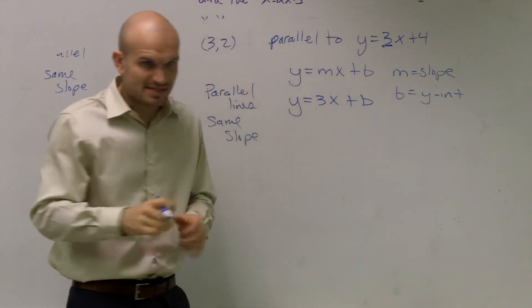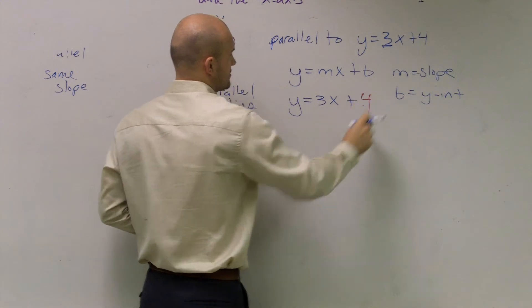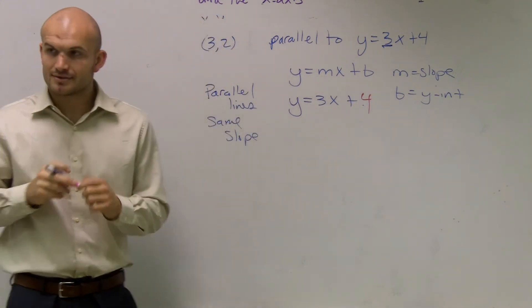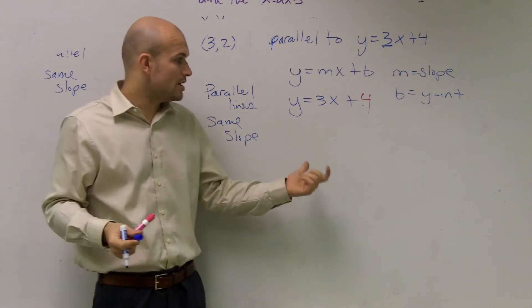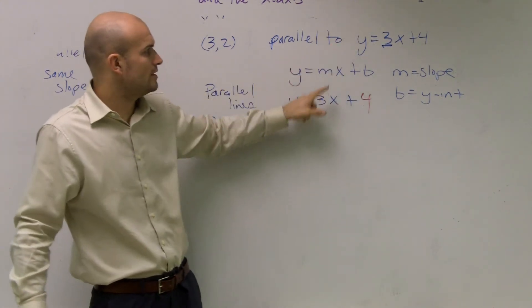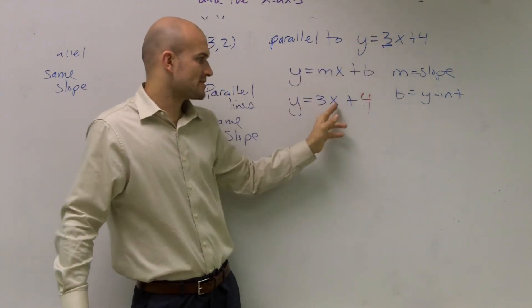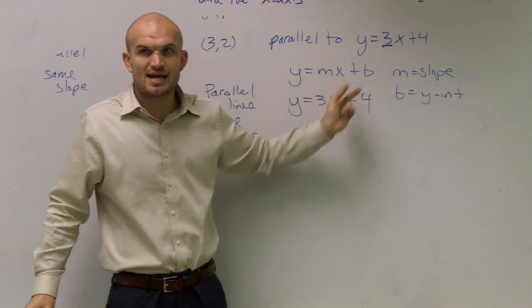Now, the biggest mistake that students want to do is they want to say, oh, well, your y-intercept is 4, right? Well, listen. It could be or it could not be. We don't know. The only thing that we know is if my slope is the same, we know if they're parallel, we know the slopes are the same. But if I say my y-intercept is the same, these equations are exactly the same.